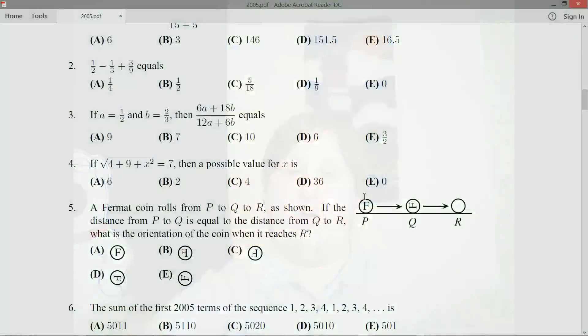Hello everybody, and welcome back. Root Beer here with question number four on the 2005 Fairmap paper. So that's the grade 11 multiple choice contest. Let's take a look at what question four has to offer. If square root of four plus nine plus x squared equals seven, then a possible value for x is.